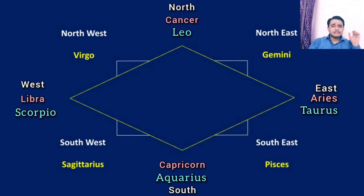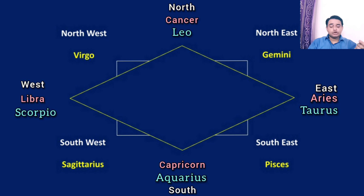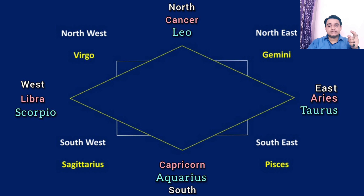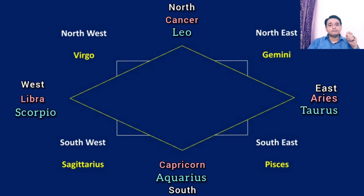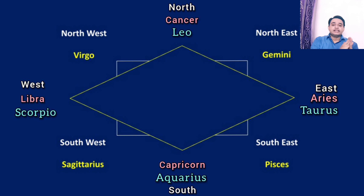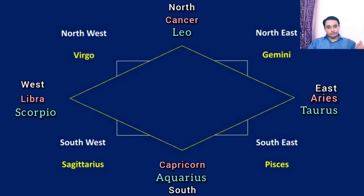Depending upon whether the sign is fixed or mobile, we will apply the rule. Suppose the sign is present in the north — it will be either Cancer or Leo. Out of Cancer or Leo, we choose fixed or movable: if we choose the fixed, we choose Leo; if we choose movable, we choose Cancer. Depending upon the movable signs, it will aspect the fixed signs; if we choose the fixed sign, it will aspect the movable signs. If we use this diagram every time while checking the horoscope, it becomes very easy to understand how the rule for aspects actually works.